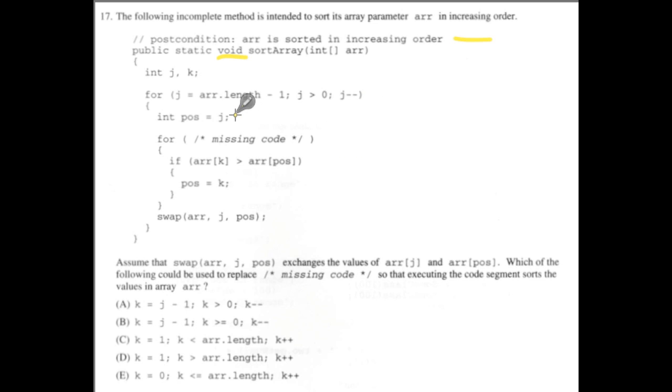And then here we're setting pos equal to J. So we're guessing that the next element that we want to sort is at J. We're just saying, okay, I think it's at pos, right? Now let's go check it. So we need something here. We'll come back to that in a minute.